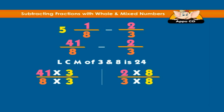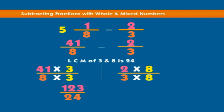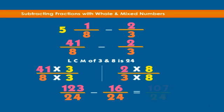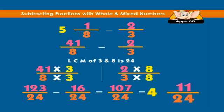The numbers become forty-one multiplied by three over eight multiplied by three, and two multiplied by eight over three multiplied by eight, which equals one hundred twenty-three over twenty-four minus sixteen over twenty-four, which is one hundred and seven over twenty-four. Converting back to a mixed number, we have one hundred and seven over twenty-four equals four and eleven twenty-fourths.